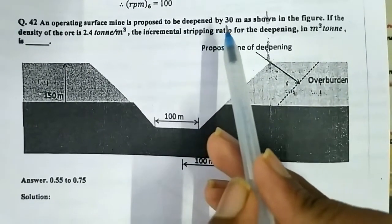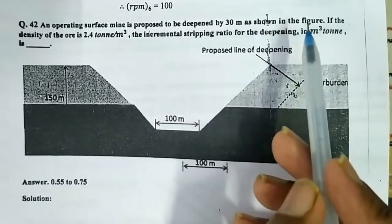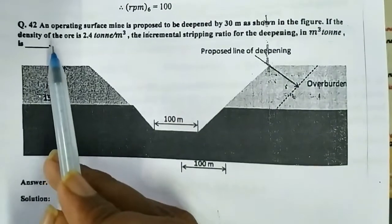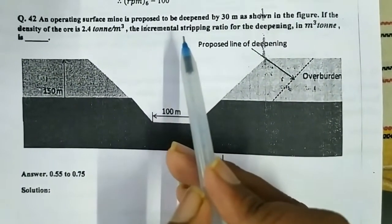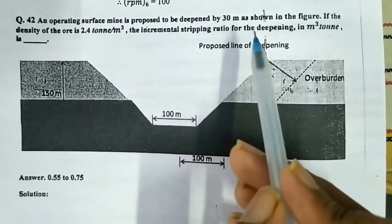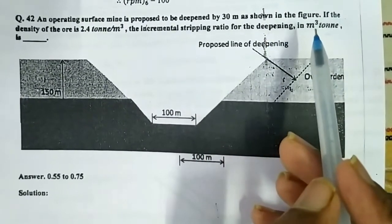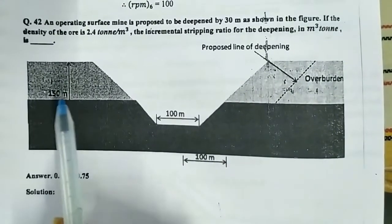If the density of the ore is 2.4 tons per meter cube, the incremental stripping ratio for the deepening in meter cube per ton is... This is the entire layout of the question.